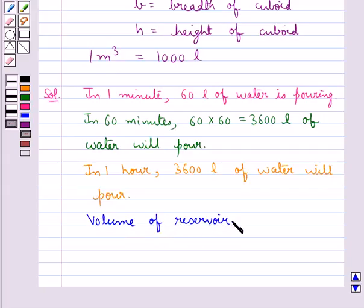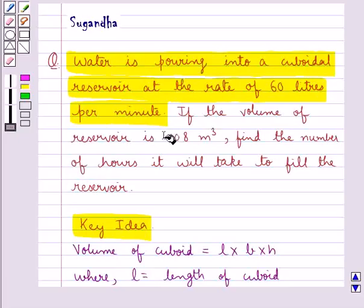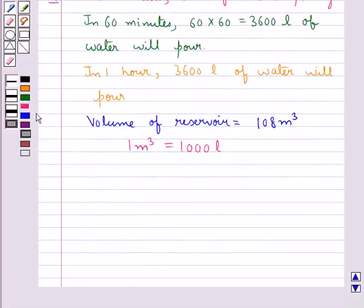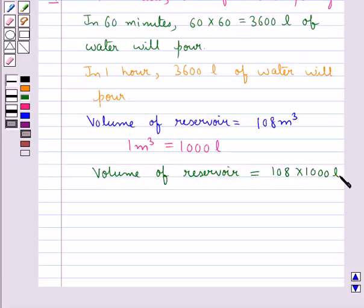Volume of reservoir is equal to 108 meter cube. 1 meter cube equals 1000 liters. Volume of reservoir equals 108 multiplied by 1000 liters, which is equal to 108,000 liters.